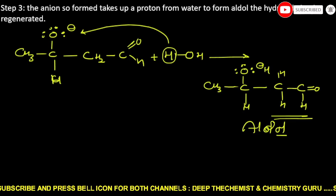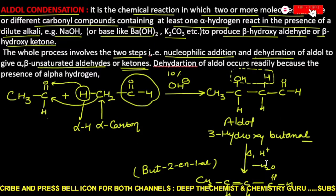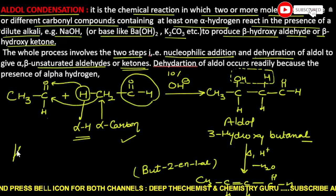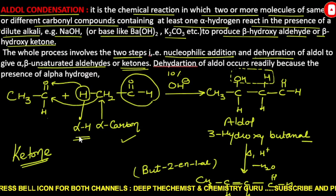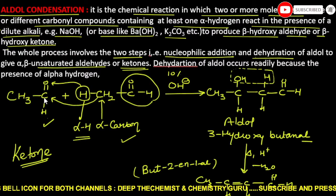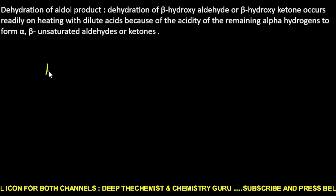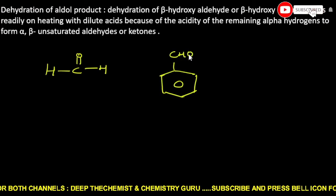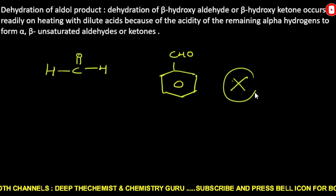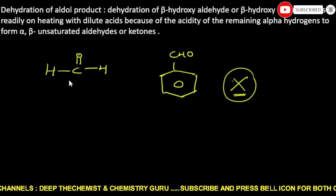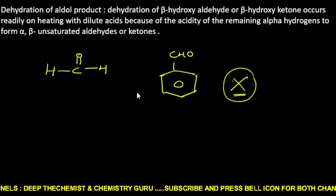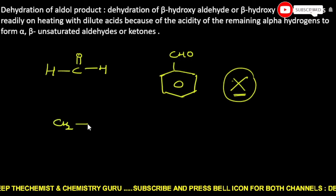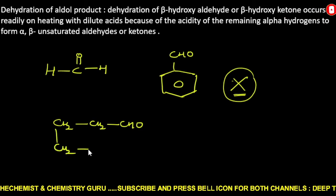The condition for aldol condensation is that at least one aldehyde or ketone must have an alpha hydrogen atom. For example, formaldehyde and benzaldehyde will not undergo aldol condensation because they do not have alpha hydrogen atoms.